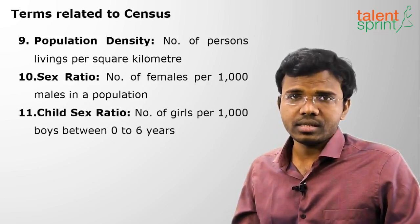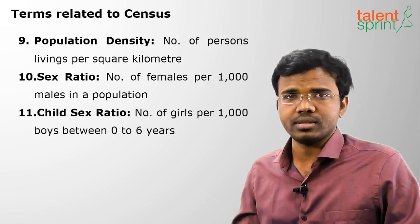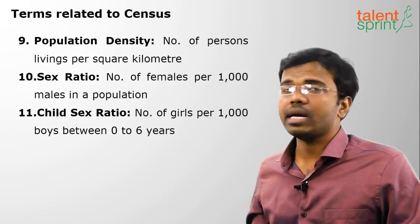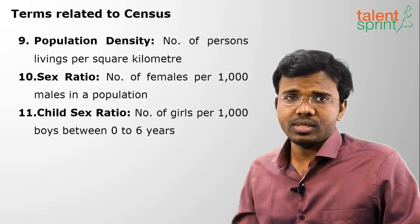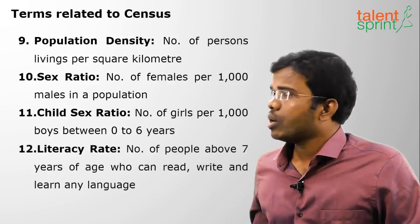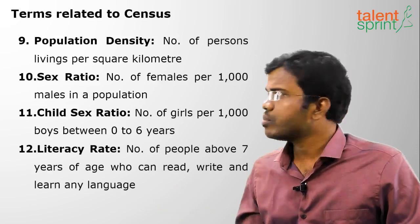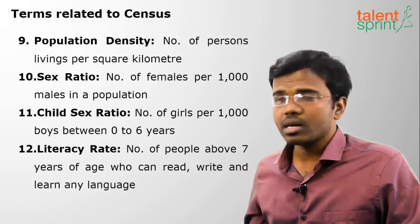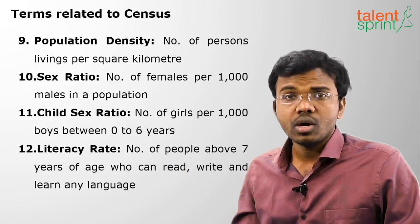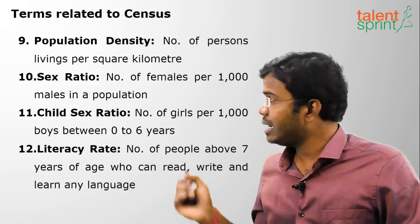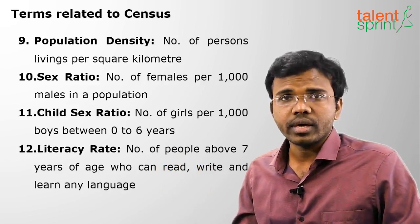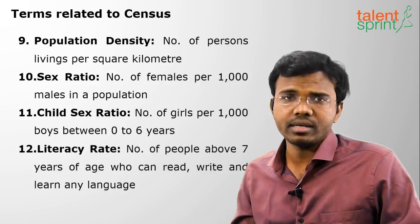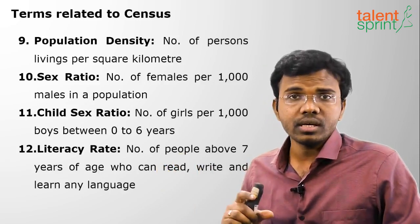The next type of sex ratio is child sex ratio, between the age group of zero to six years — the number of girls per thousand boys. Moving on to literacy rate: it is the number of people above seven years of age who can read, write, and learn any language in India. Such persons are called literate, and when we calculate the percentage, it is called literacy rate.